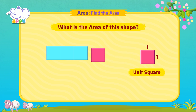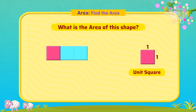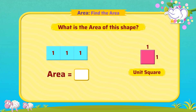Let's fit this unit square into this shape and see how many such squares fit in. One, two, and three. Three unit squares fit in this shape. So the area of this shape is three square units.